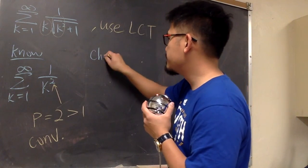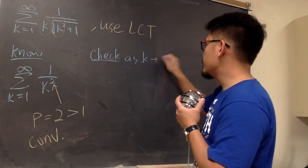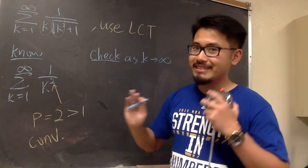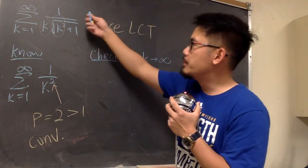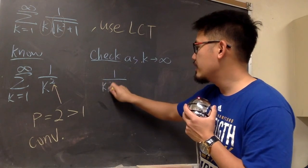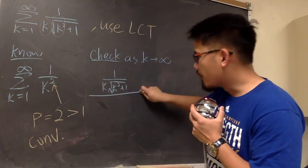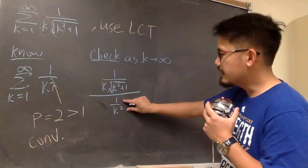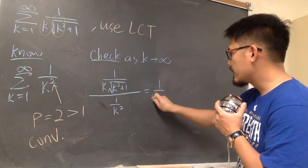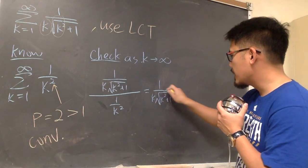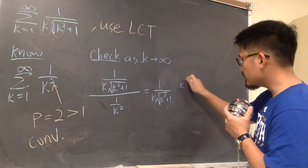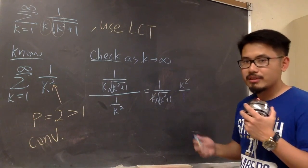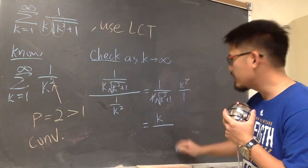Now we do the limit comparison test check: as k goes to infinity. It doesn't really matter how you set it up, but let's be consistent. We put the unknown series, 1 over k times square root of k squared plus 1, over the known series, 1 over k squared. We flip the denominator and multiply: this is the same as 1 over k times square root of k squared plus 1, times k squared over 1. The k squared and one k cancel, leaving k on top.